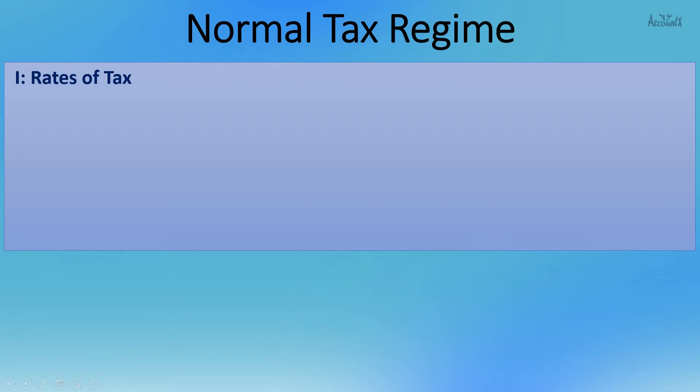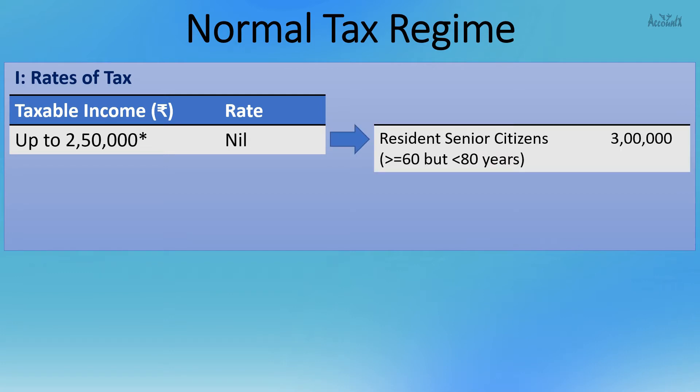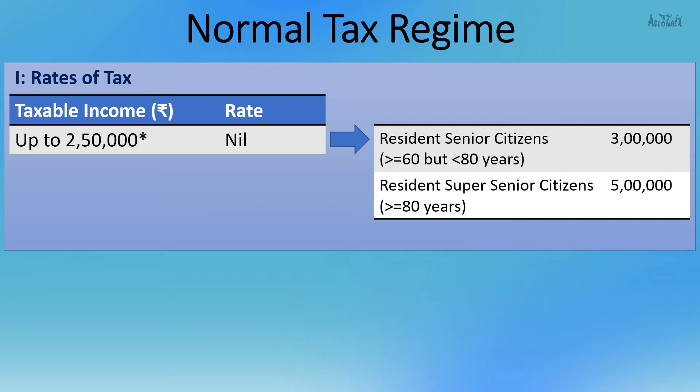We can broadly differentiate the two based on rates of tax and exemptions or deductions available. Like most other countries, in India we follow the progressive tax rate system, i.e., the tax rate increases as the taxable income goes up. For a taxable income up to 2.5 lakhs, there is no tax applicable — this is called the basic exemption limit. For resident senior citizens, this limit is 3 lakhs, and for resident super senior citizens, it is 5 lakhs.